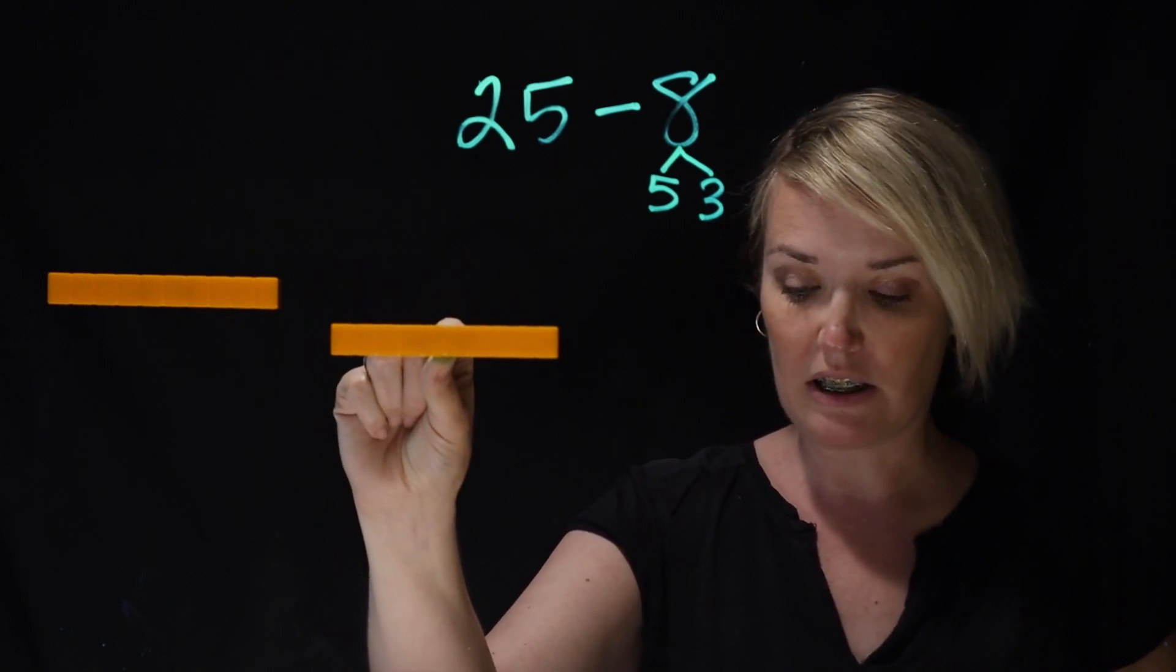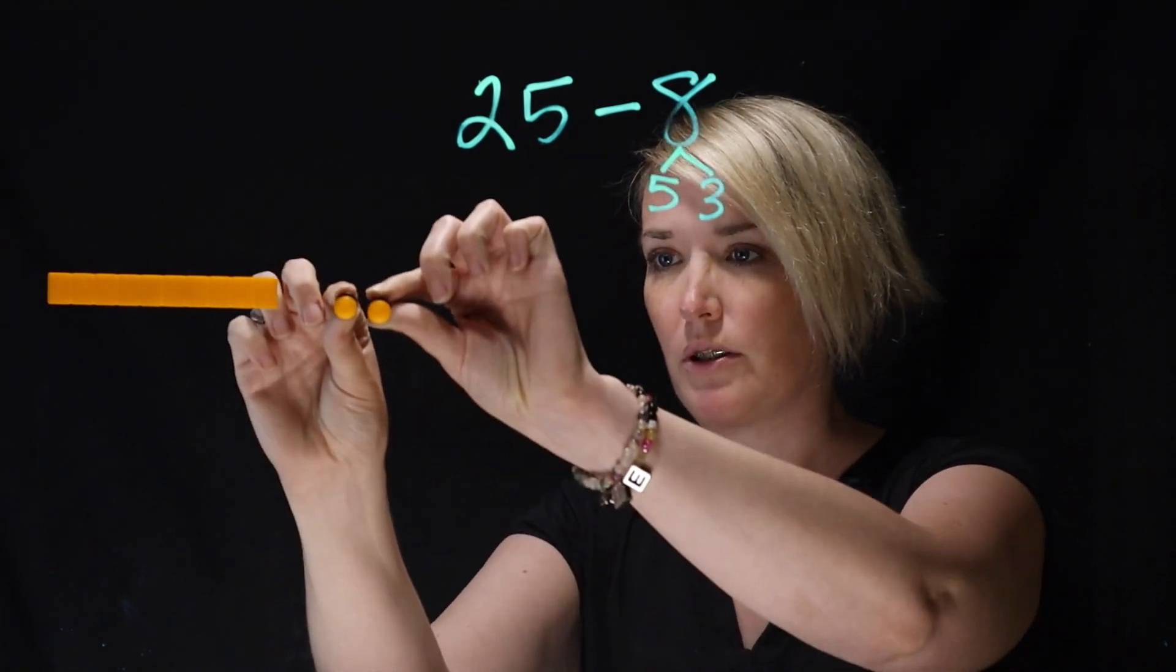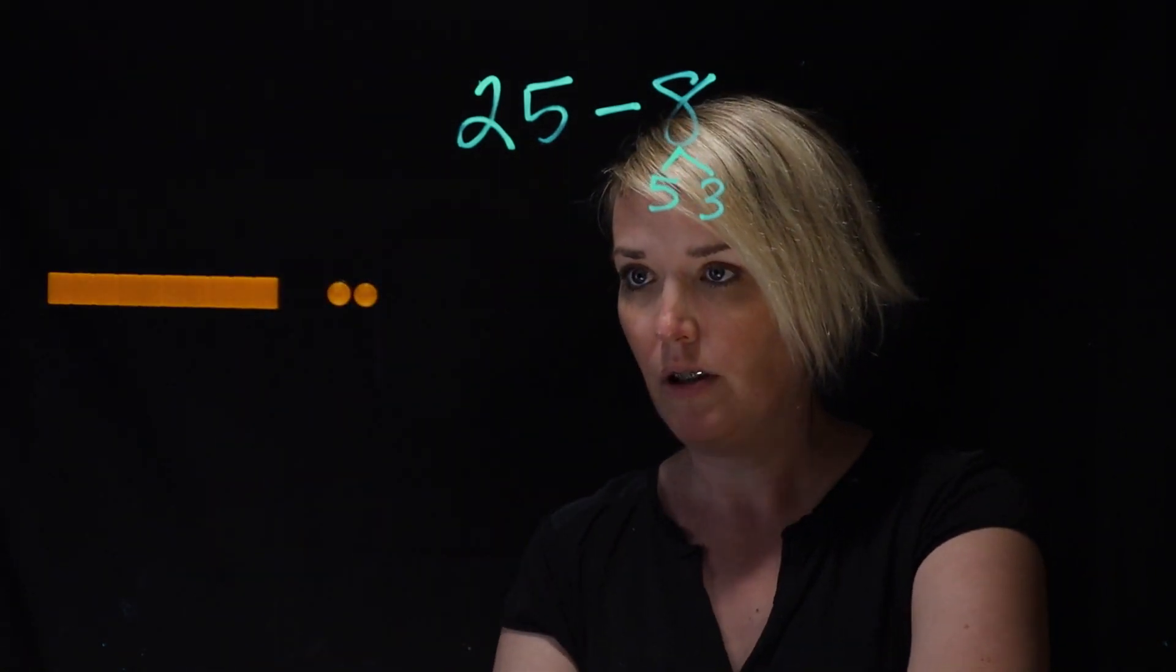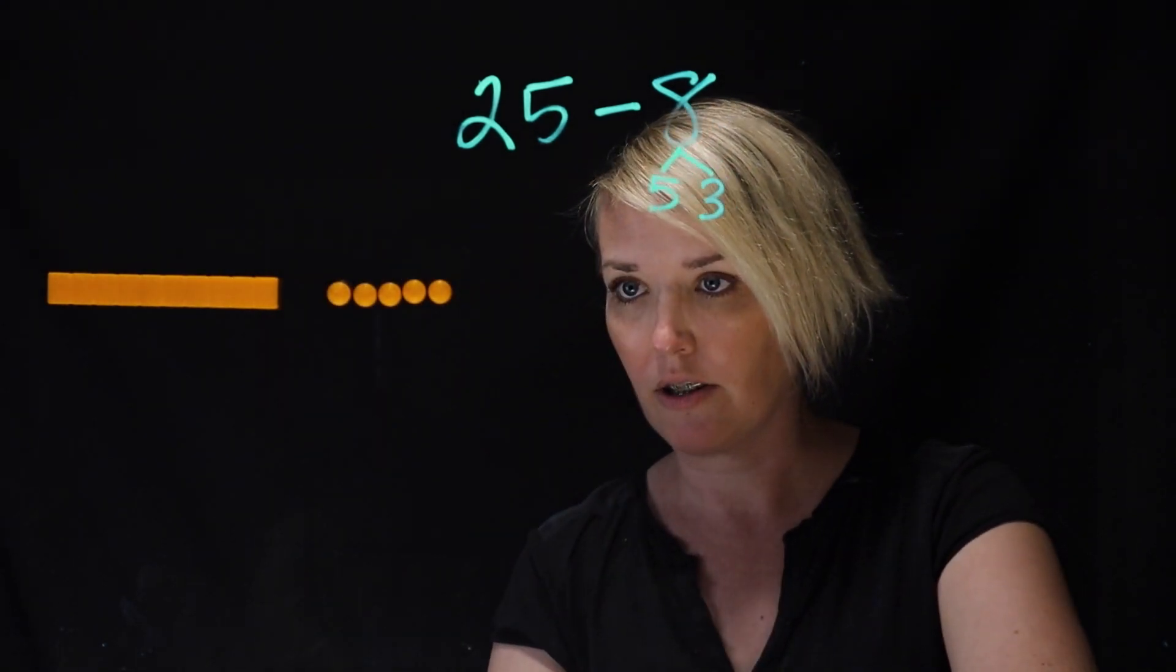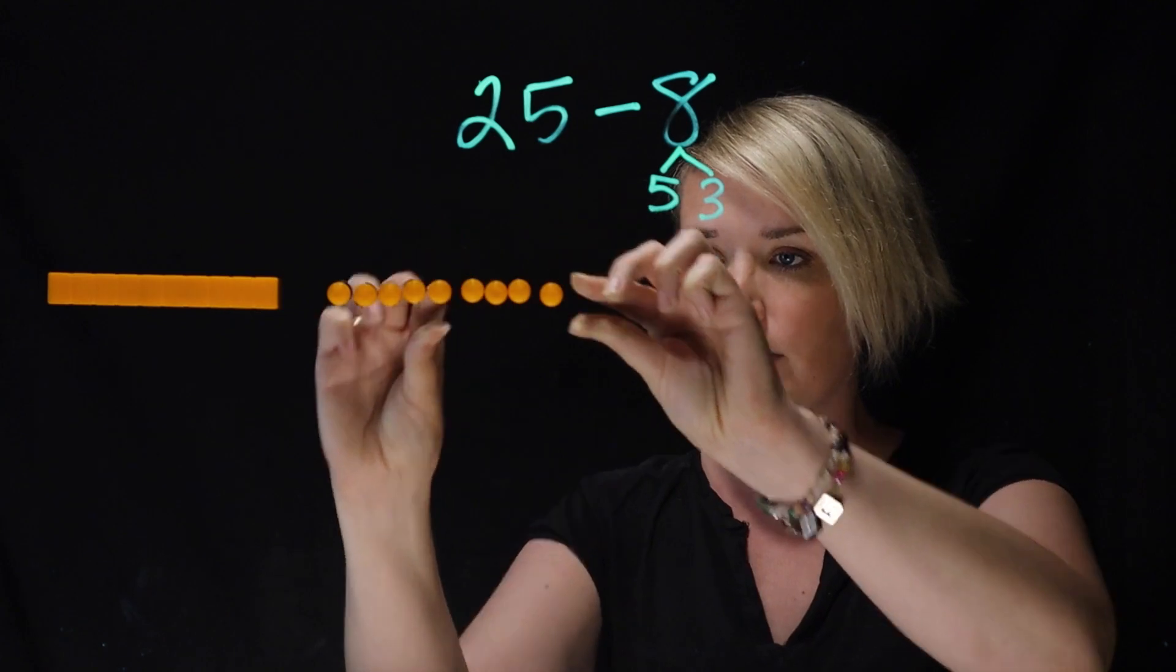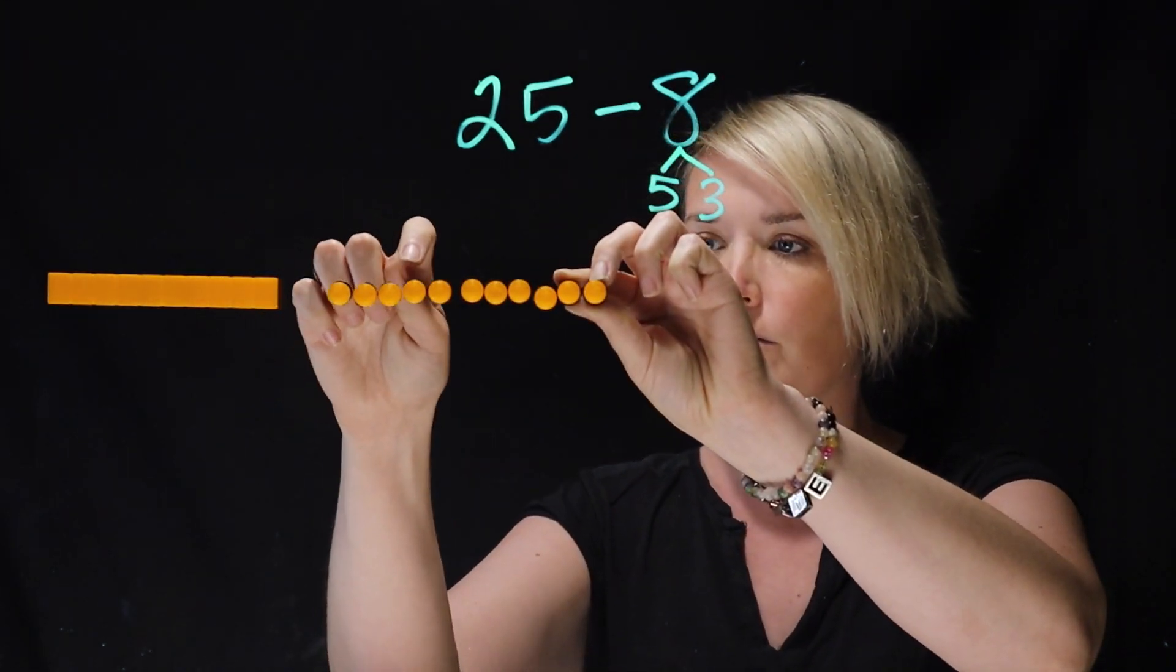So she's actually going to exchange it for 10 individual ones. So here we go. 1, 2, 3, 4, 5, and she's going to do another 5 here because those bars are worth 10. So let's just make sure. 1, 2, 3, 4...